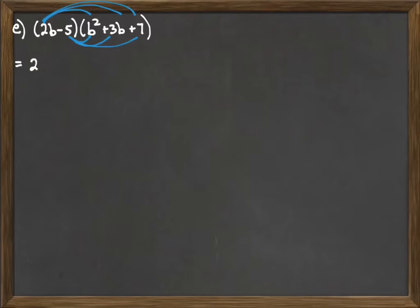2b and b squared will be 2b cubed. 2b times 3b will be 6b squared. And 2b times 7 will be 14b. Now we can continue writing these out in a line like we've done previously.